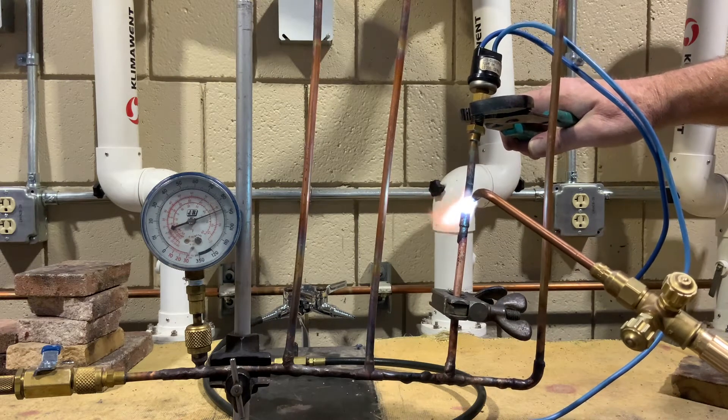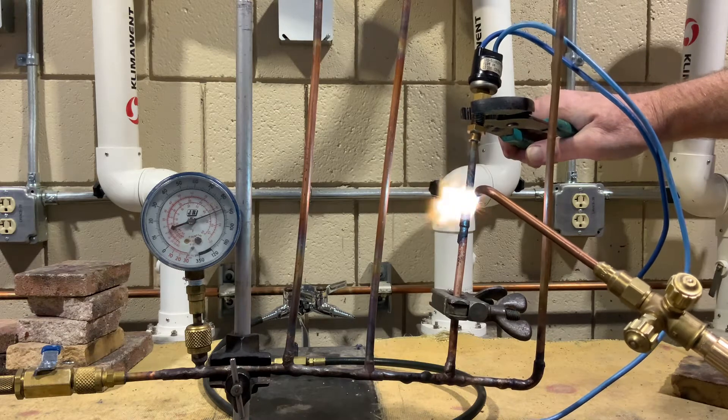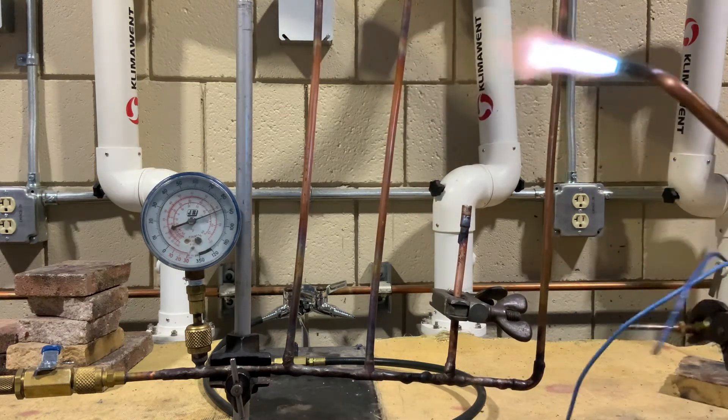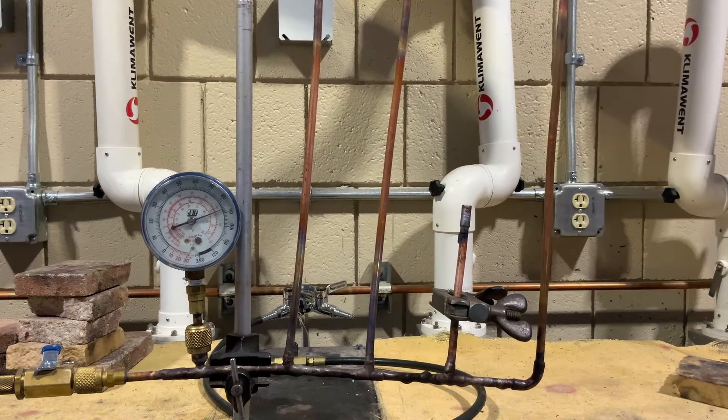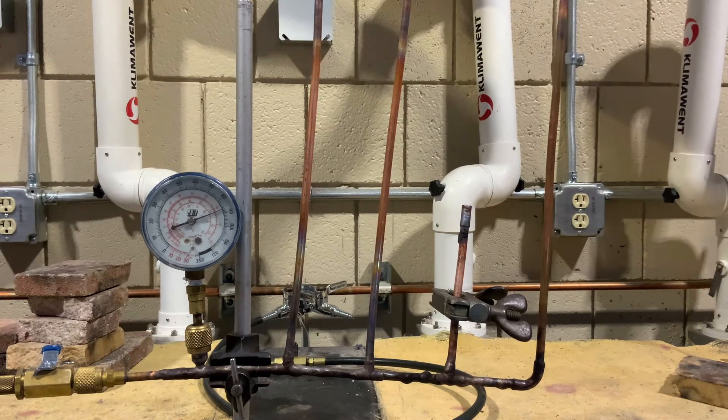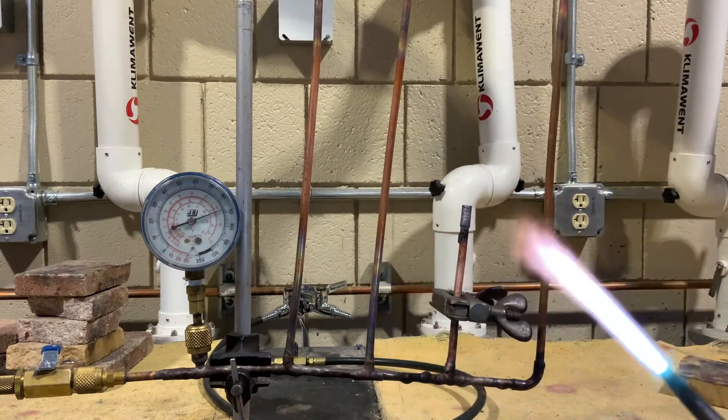So when I unsweat this, there should just be a little bit of pressure in there from that pipe itself. But notice I took that off and we didn't really lose any pressure out of that.